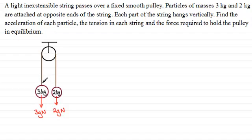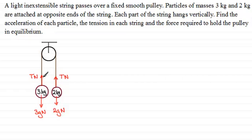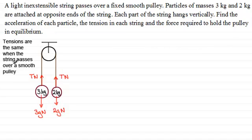There's a tension T newtons acting upwards on the 3 kilogram mass, and a tension acting upwards on the 2 kilogram mass. These two tensions are exactly the same — both T newtons — because the pulley is a smooth pulley. You'll generally be asked why the tensions are the same, and the answer is that the tensions are equal when the string passes over a smooth pulley. Those are the only forces we need on the particles.